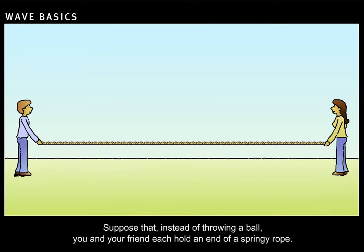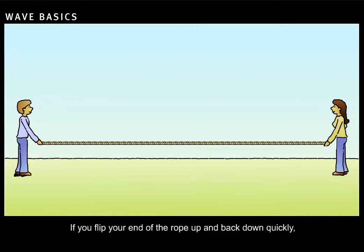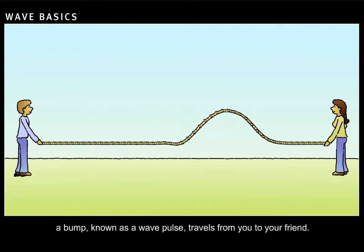Suppose that, instead of throwing a ball, you and your friend each hold an end of a springy rope. If you flip your end of the rope up and back down quickly, a bump, known as a wave pulse, travels from you to your friend.